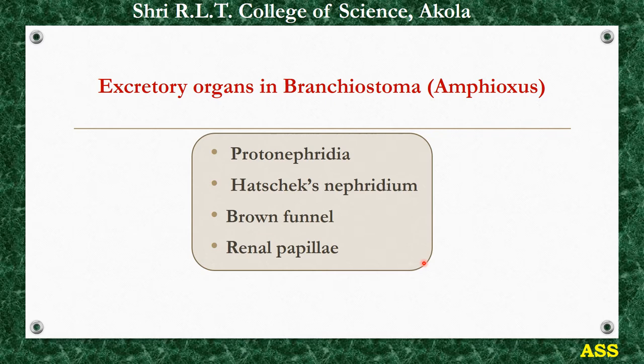These excretory organs closely resemble the protonephridia of flatworms or polychaete annelids, and thus provide a very good example of parallel evolution. Some other organs and cells are also regarded as excretory in amphioxus. The main excretory organs are: protonephridia, Hatschek's nephridium, brown funnels, and renal papillae.